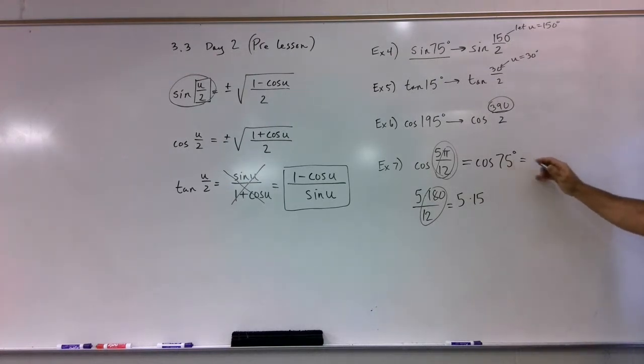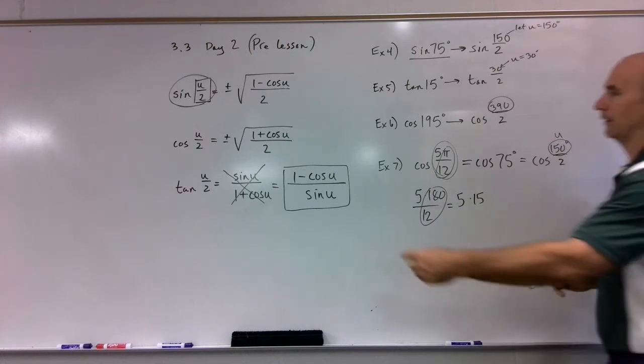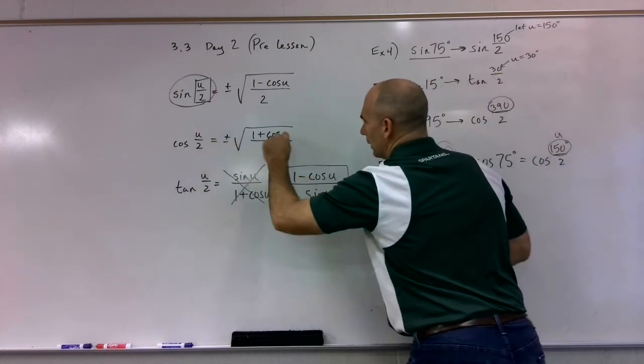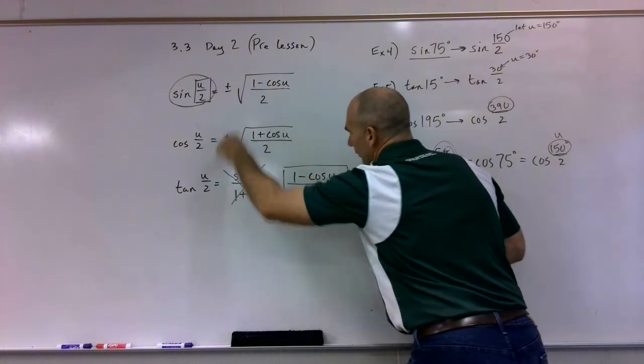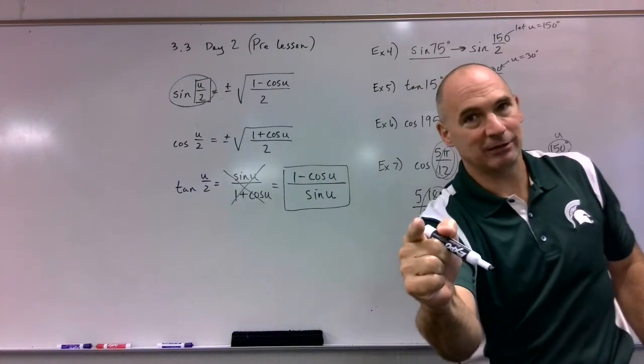And that equals... and then I'm going to have to manipulate this to being cosine of 150 over 2, and that's my u, and that's what I can plug in here. And then simplify this and then you'll be done. That's how you get these things started.